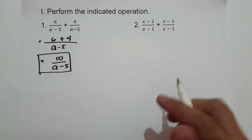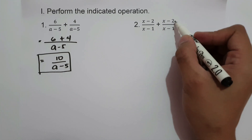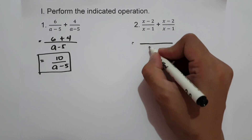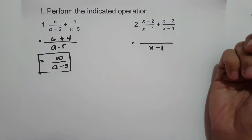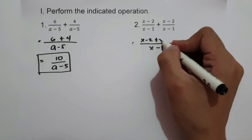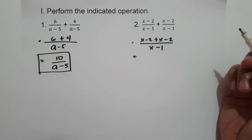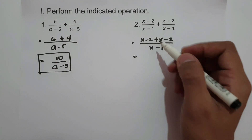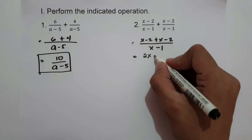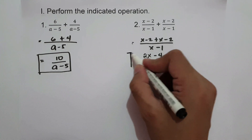On number 2, we have (x minus 2) over (x minus 1) plus (x minus 2) over (x minus 1). We copy the denominator, x minus 1, and then add the numerators: (x minus 2) plus (x minus 2). Combining like terms: x plus x is 2x, and negative 2 plus negative 2 is negative 4. So the final answer is (2x minus 4) over (x minus 1).